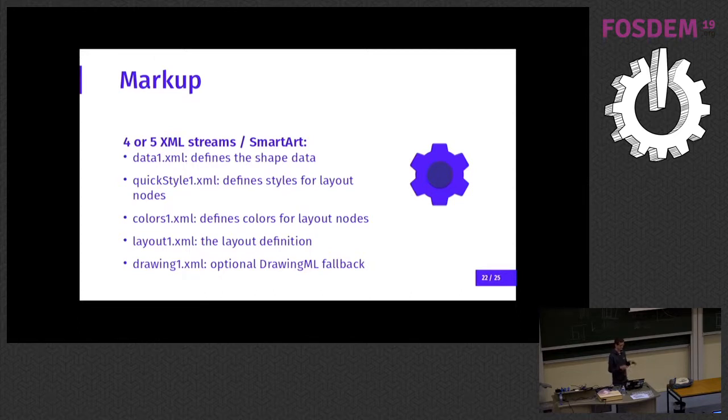Then there is the layout XML. So this is the container for the constraints. This is the one that you read the most when you try to improve this code. And again, this is a fixed set. So you choose that you want a vertical bracket list, and then you get a fixed layout. And whatever you do with your content, the layout definition is not changing. And optionally there is this drawing stream which is a pre-calculated DrawingML group shape. And if it's there, then we can easily just import that into Impress.